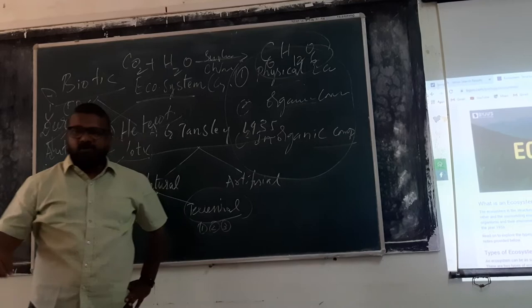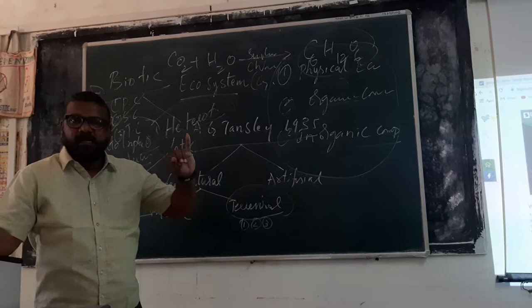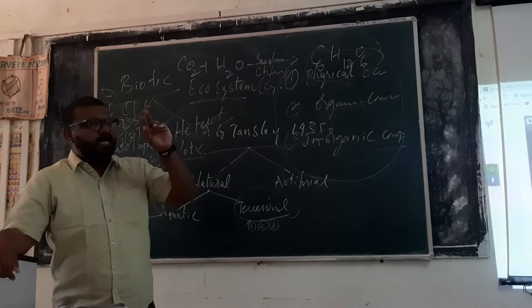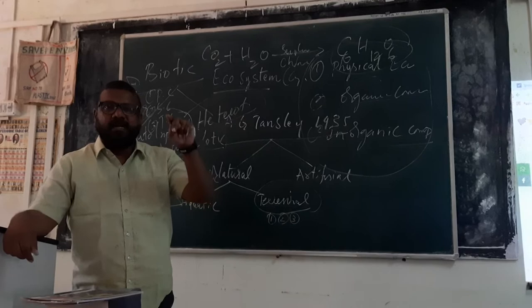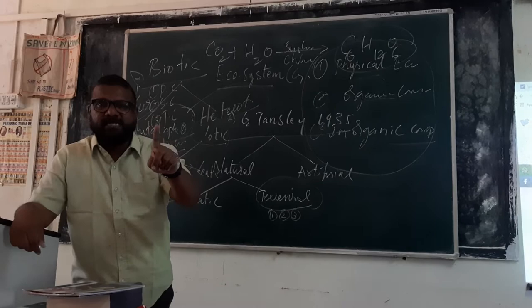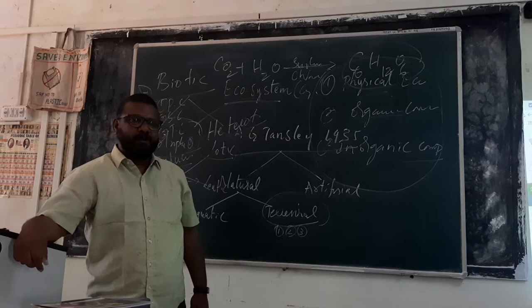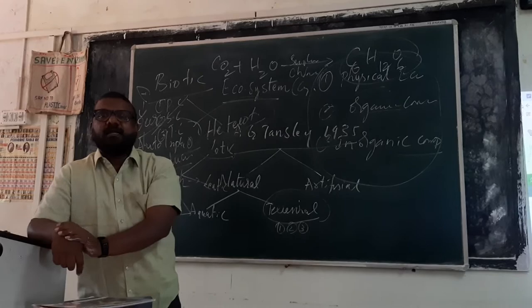Coming towards the functions of an ecosystem, we classify the functions into productivity, food chain, food web, ecological pyramids, and ecological succession. These are the major important functions of an ecosystem. There are two significant phenomena in the ecological system — one is called as bioaccumulation and the other one is called as biomagnification. The flowing of a toxic material in any ecological system is called as bioaccumulation, and that toxic level which will be flowing in the food chain is called as a biomagnification process. For example, pesticides or insecticides which are used in the agriculture field.